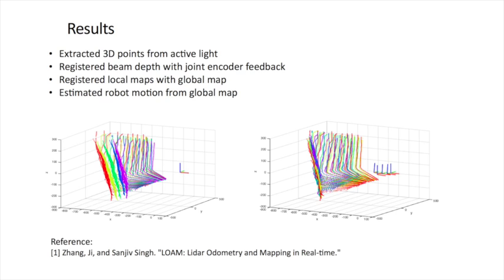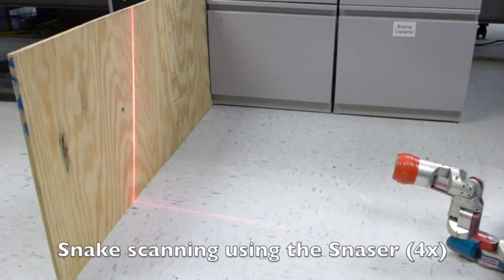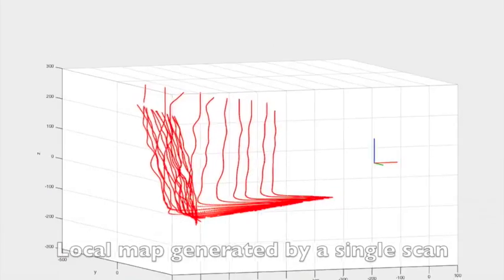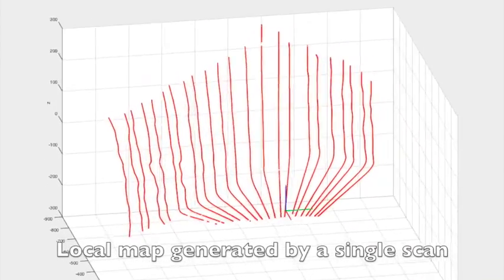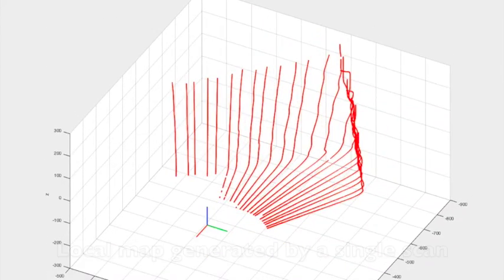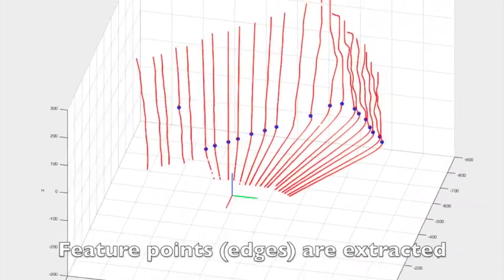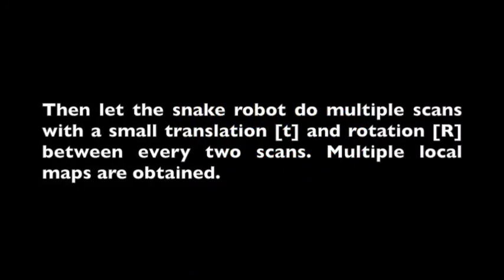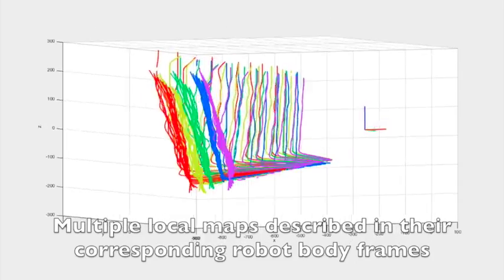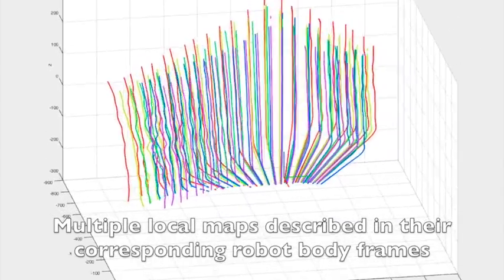The left figure shows five consecutive local maps viewed from the first joint angle of the snake. After doing registration, we can align all the local maps into one global map. The frames on the right indicate the trace of the motion of the robot. This is a video demonstration of our project. The snake robot is scanning the environment using the SNAZER sensor on its head module. This is the local map generated by a single scan. The blue dots represent the extracted feature points on the edge of this scan. Then the snake robot locomotes and executes scanning at different poses.